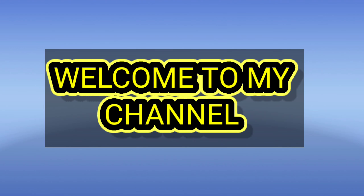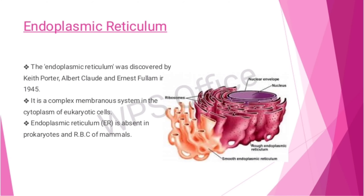Welcome to my channel. Today I will discuss the endoplasmic reticulum. The endoplasmic reticulum was discovered by Kate Porter, Albert Claude, and Ernest Fulham in 1945. It is a complex membrane system in the cytoplasm of eukaryotic cells. Endoplasmic reticulum is absent in prokaryotes and the red blood cells of mammals.